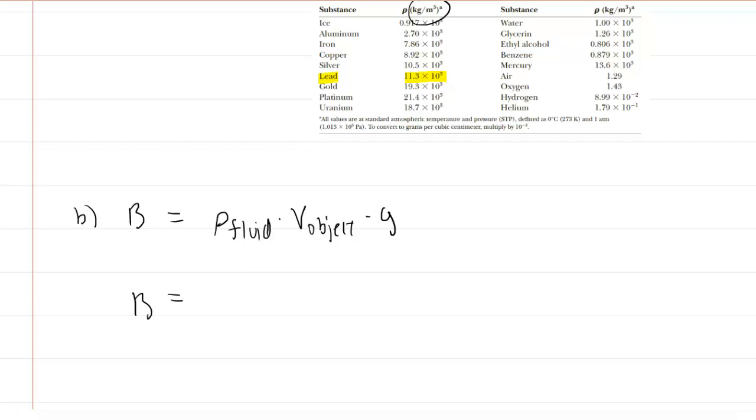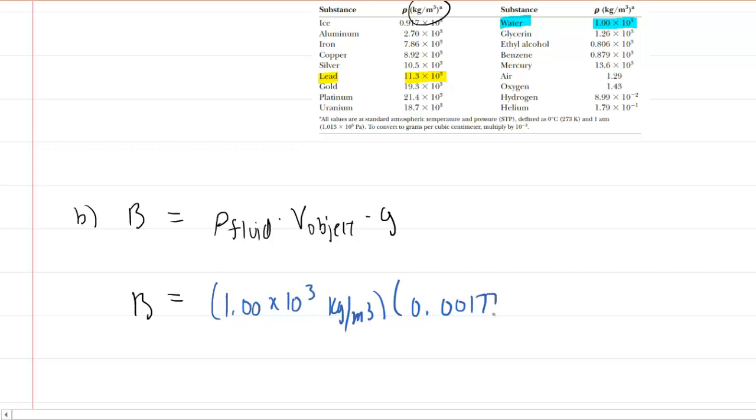The fluid is water, and we can see from our handy chart here that the density of water is 1,000 kilograms per meter cubed, or 1.00 times 10 to the power 3 kilograms per meter cubed. Then you'll multiply that by the volume of the object which you just determined in part A of the question, and then multiply that by 9.8 meters per second squared. So when you punch this all into your calculator, you will see that the buoyant force is 17.3 newtons.